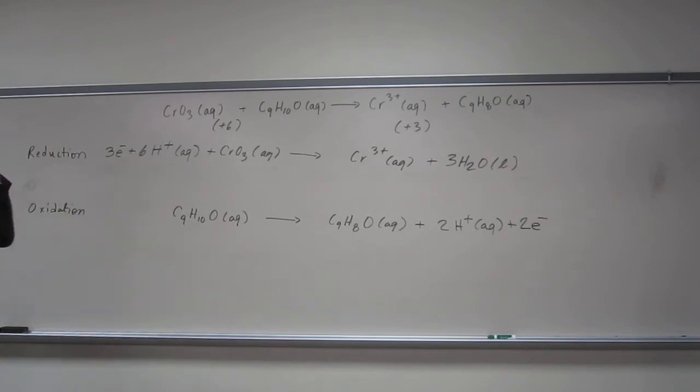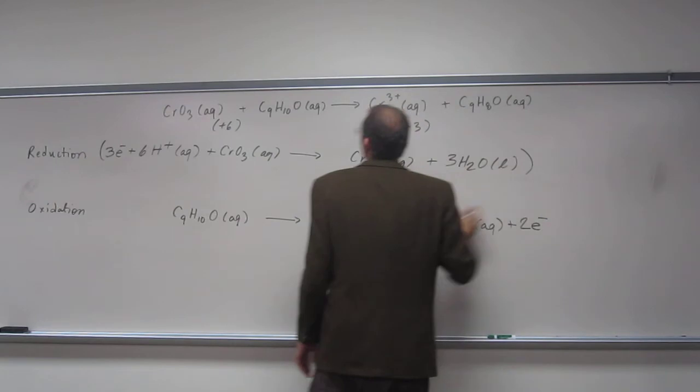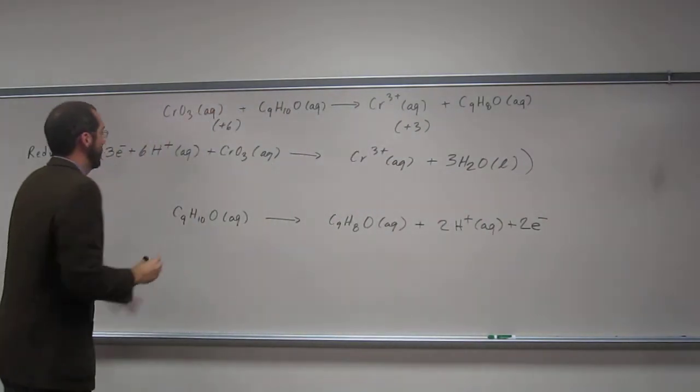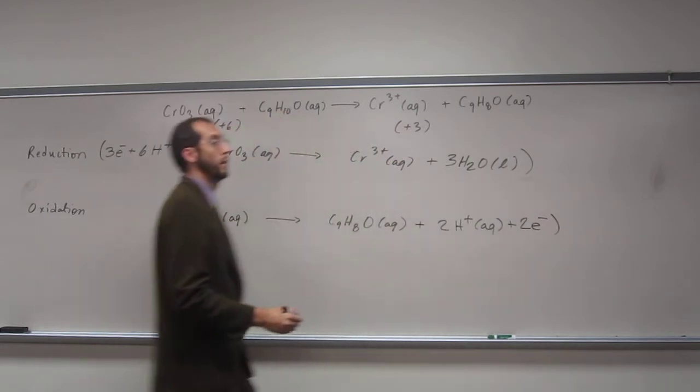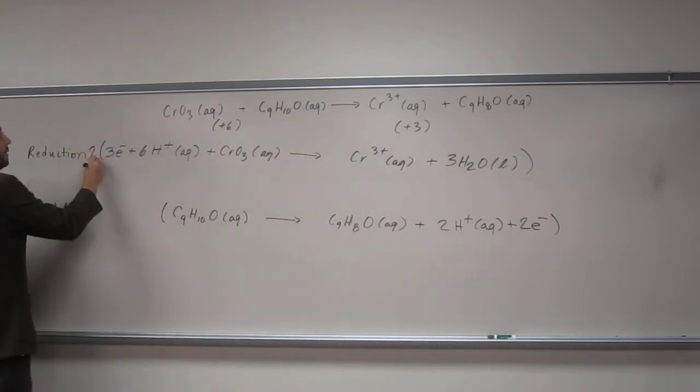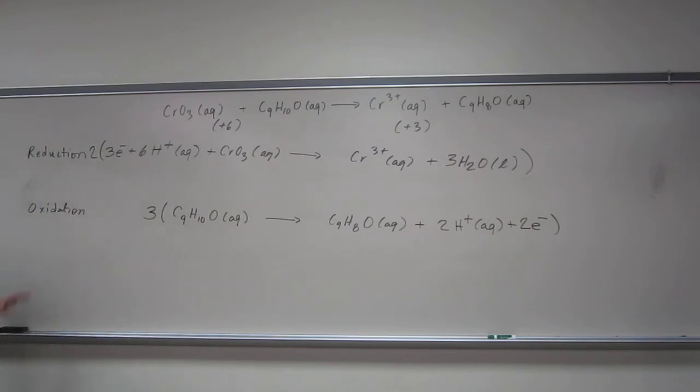Now we've got to balance the number of electrons to each of these. We need to find a common factor. This one has three electrons, and this one has two. So we're going to multiply this one by two, and this one by three, giving us six electrons in each one.